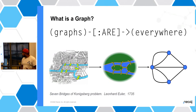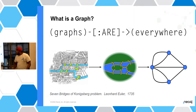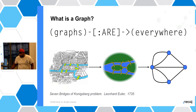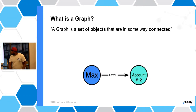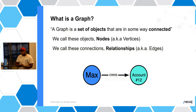Graph theory started with Leonard Euler and a problem called the Seven Bridges of Königsberg. There used to be seven bridges between landmasses, and Euler realized it's impossible to walk over all the bridges without crossing the same landmass twice. This became the start of what he called graph theory. Simply put, a graph is just a set of objects that are somehow connected. What we call these objects in a graph database is nodes, and what we call the connections are relationships. Some mathematicians call them vertices and edges — but that's just the formal terminology.